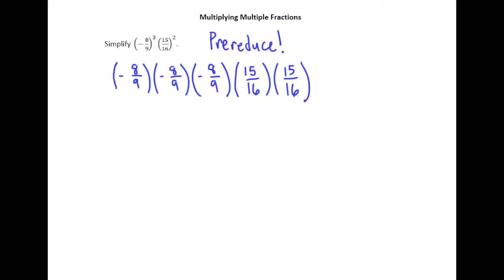So we'll look for things on top and things on bottom that have common factors. So, for example, I know that I can divide 8 by 8 to get 1. And that's okay because 8 also goes into 16. So 16 divided by 8 is 2. This 8 divided by 8 is 1. This 16 divided by 8 is 2.